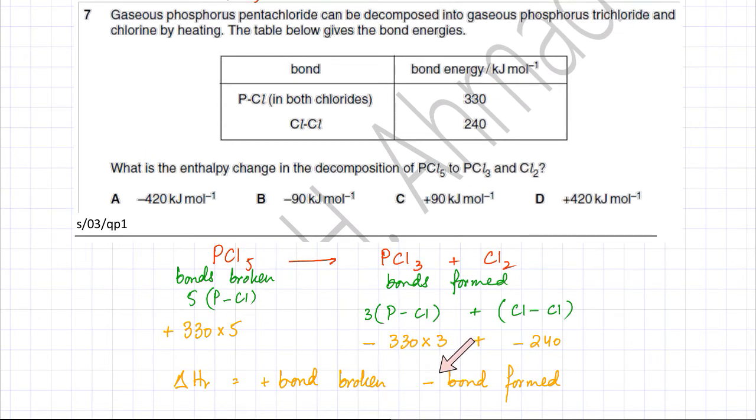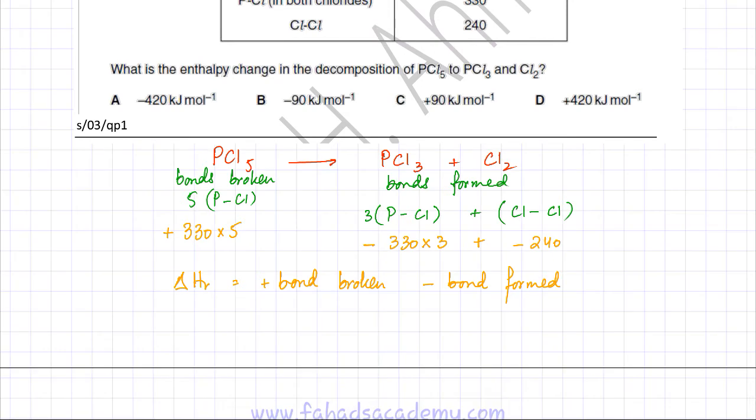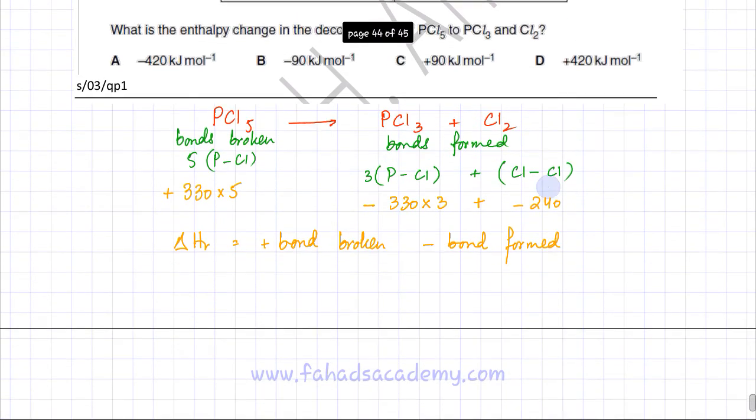The reason this has a negative sign is because bond formation is exothermic, so we've already added that negative sign, so we don't need to add another negative sign.